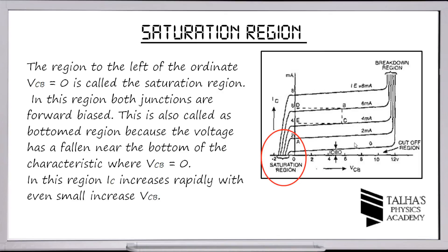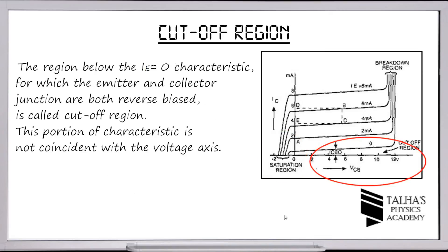The saturation region is to the left of the ordinate where VCB equals zero; in this region both junctions are forward biased. It is called the bottom region because the voltage has fallen near the bottom of the characteristic. Here IC increases rapidly with even a small increase in VCB. The cutoff region is below the zero emitter current line, where both emitter and collector junctions are reverse biased; this portion is not coincident with the voltage axis.